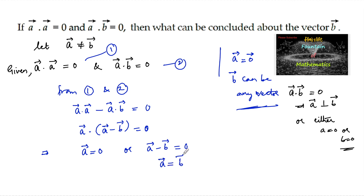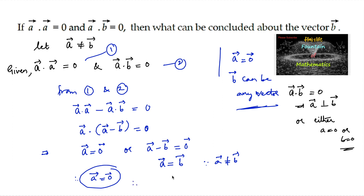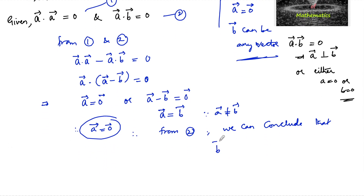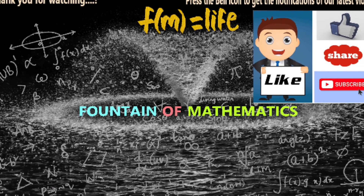But here, vector a cannot equal vector b — they are different vectors, so a = b is not correct. Therefore, vector a must equal 0; it is the zero vector. Since a is confirmed as the zero vector, from equation 2, a·b = 0 is always satisfied for any b. We can conclude that vector b can be any vector, satisfying both equations 1 and 2.